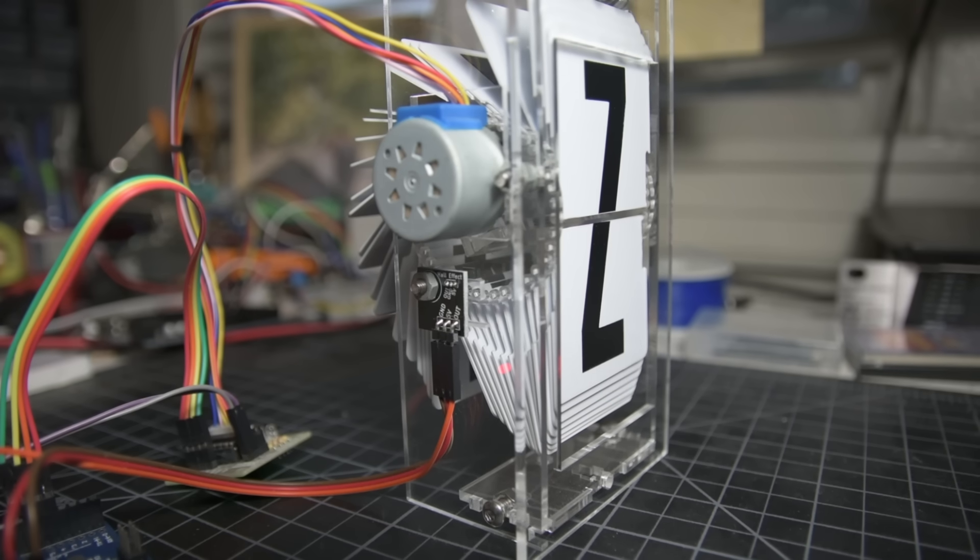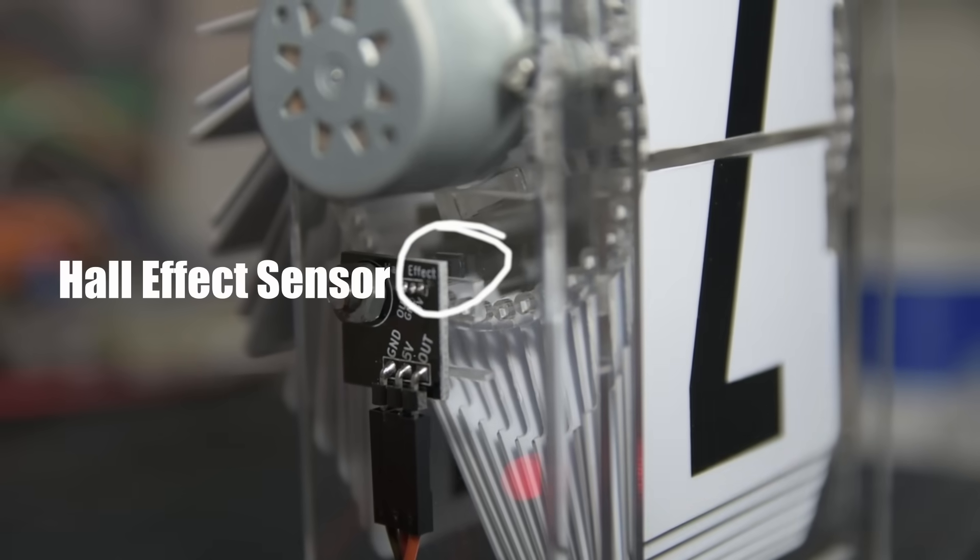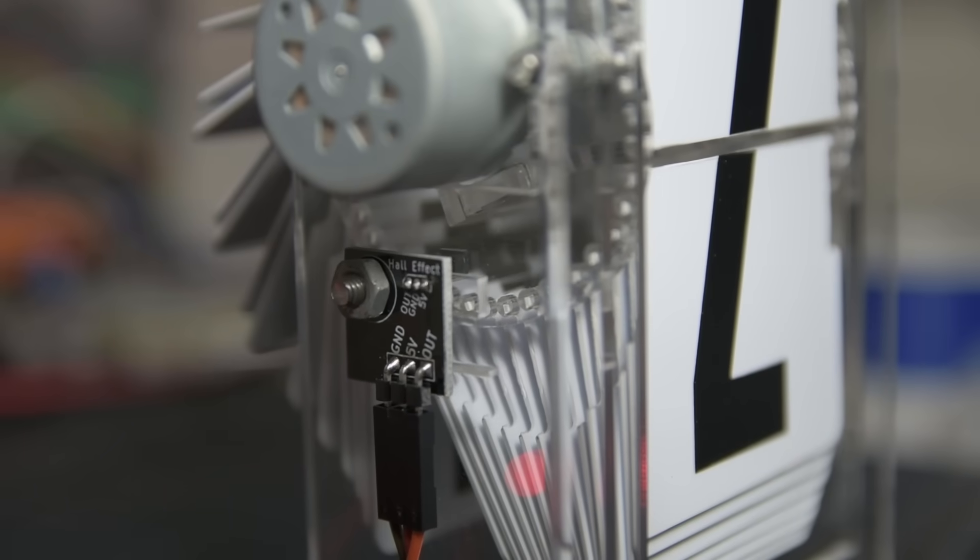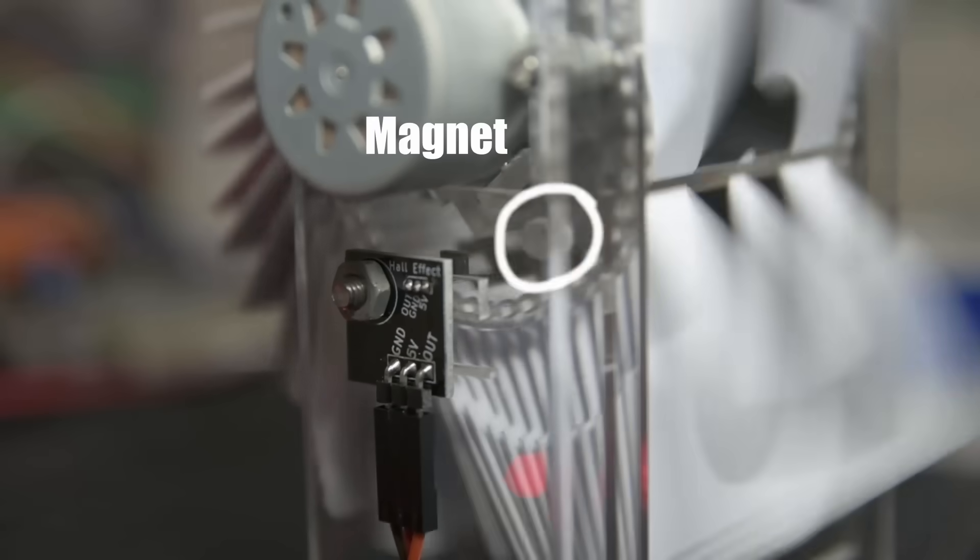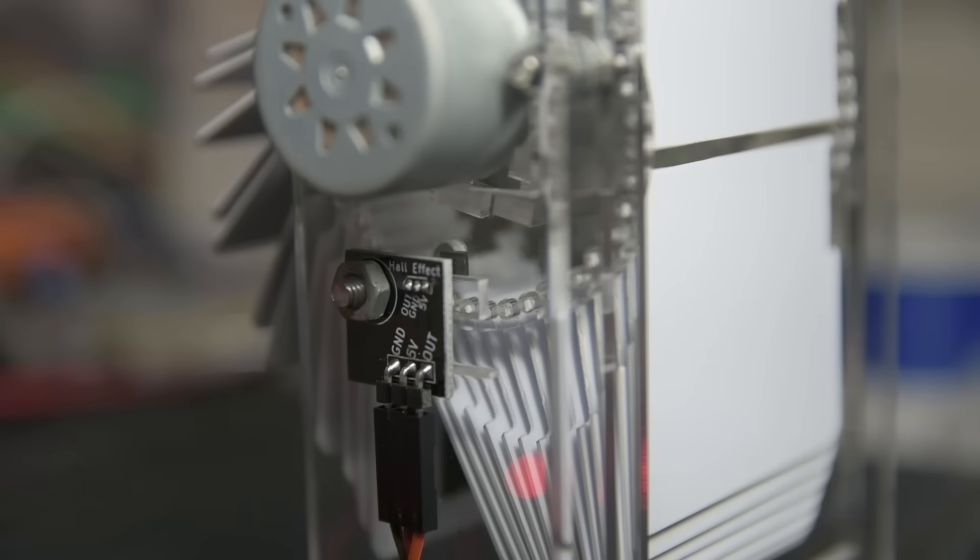To answer that, we'll have to look closer at this Hall effect sensor. The Hall effect sensor allows the Arduino to find a consistent home position by detecting a magnet in the spool. Once it finds that magnet, it knows exactly where the spool is rotated and which letter is showing.